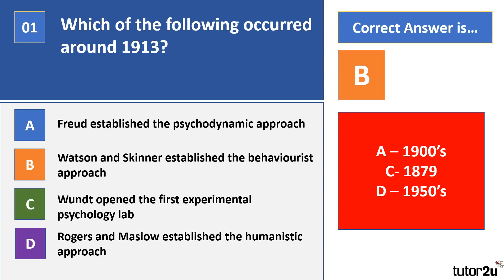The correct answer is B — Watson and Skinner established the behaviourist approach around 1913. In terms of the timeline of psychology: Freud was in the 1900s establishing the psychodynamic approach; Wundt's experimental psychology lab was in 1879; Rogers and Maslow established the humanistic approach in the 1950s. You're also expected to know about the cognitive approach, cognitive neuroscience, and SLT. Questions may be MCQs like this or ask you to put the timeline in order.